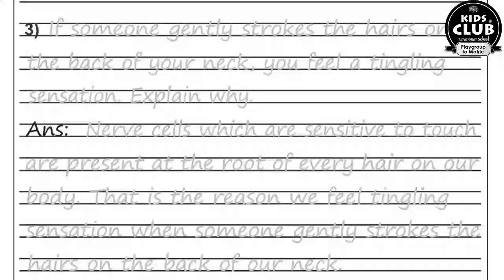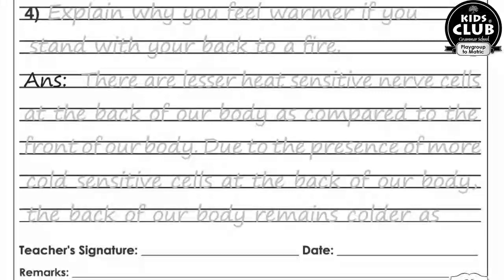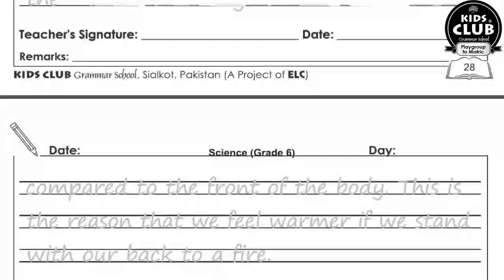Question number four: Explain why you feel warmer if you stand with your back to a fire. There are fewer heat-sensitive nerve cells at the back of our body compared to the front. Due to the presence of more cold-sensitive cells at the back of our body, the back remains colder compared to the front. This is the reason why we feel warmer when we have our back towards the fire.